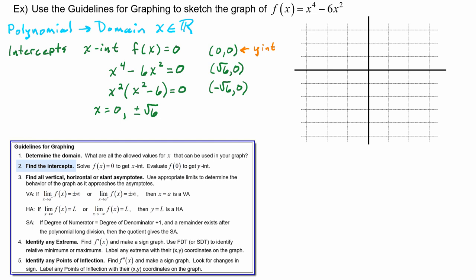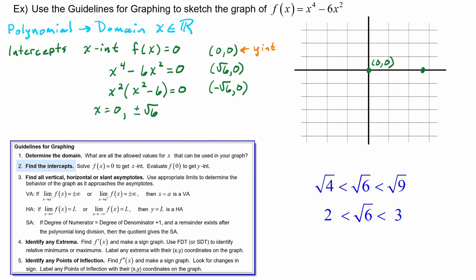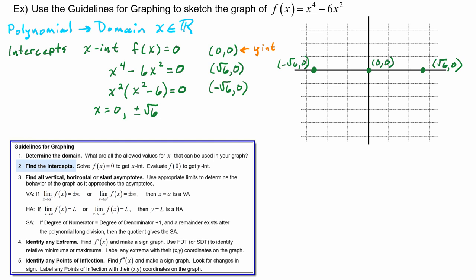Plotting the intercepts: (0, 0) at the origin; (√6, 0) — since √6 is between √4 = 2 and √9 = 3, we place it between 2 and 3; and (-√6, 0), placed between -2 and -3. So we have three x-intercepts.